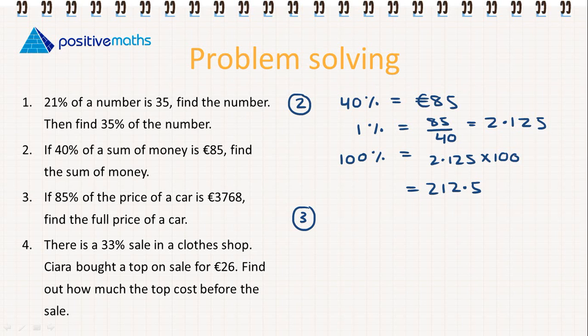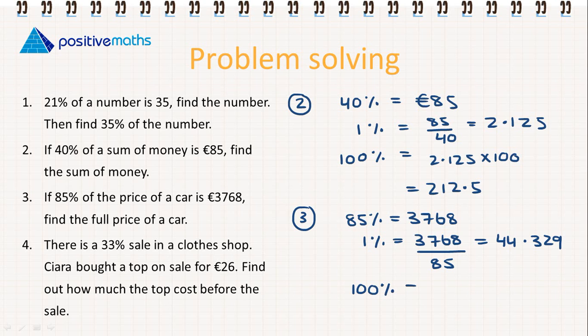And part three. 85% of the price of a car is 3,768 euro. Again, our 1% is going to be 3,768 divided by 85. Rounded to three places is going to be 44.329. Then our 100%, the full price of the car is going to be 4432.9, which is equal to 4,432.90.